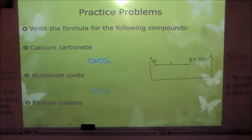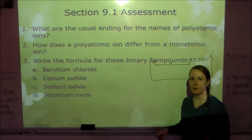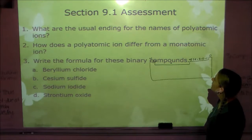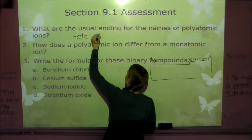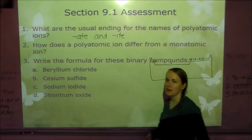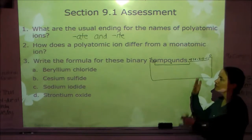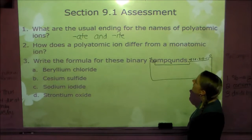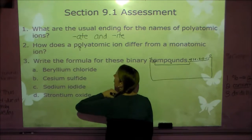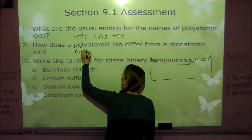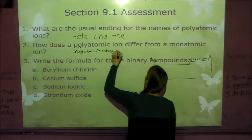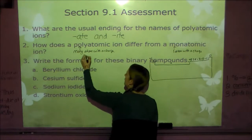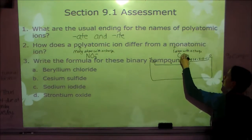Let's move on to the section assessment. What are the usual endings for polyatomic ion names? Just look at your chart — they end in -ate and -ite. Nitrate, nitrite, sulfate, sulfite, chromate, carbonate, hydrogen sulfite — most end in -ate or -ite, though ammonium, hydroxide, and cyanide do not. How does a polyatomic ion differ from a monatomic ion? Poly means many, so it's many atoms with a charge — like NO₃⁻. Mono means one, so it's one atom with a charge — like Cl⁻.